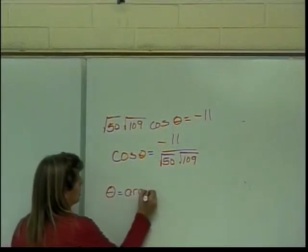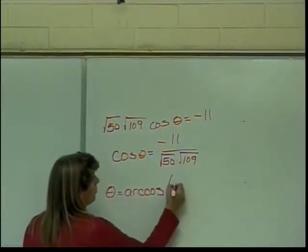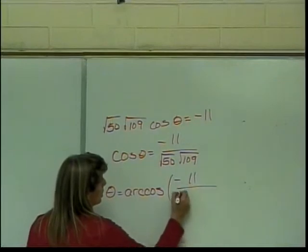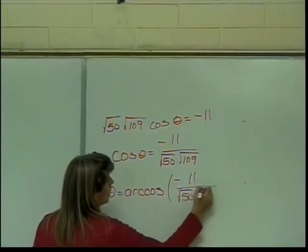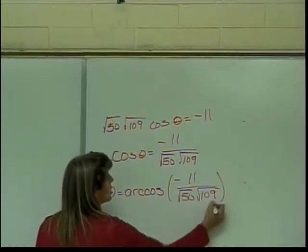is equal to the arc cosine of negative 11 over the square root of 50 times the square root of 109. Now I have a question.